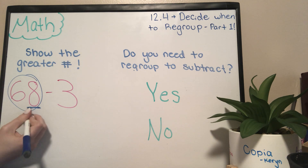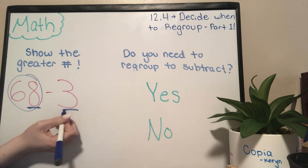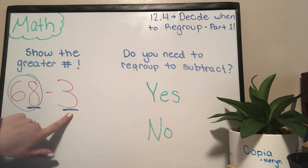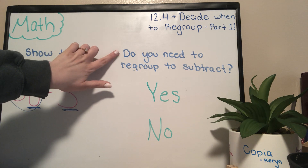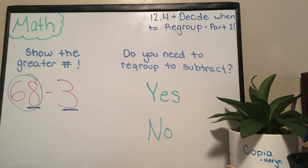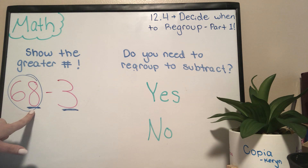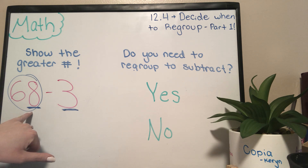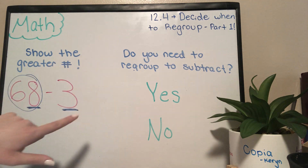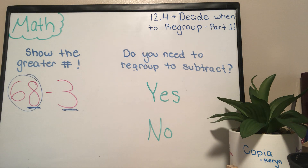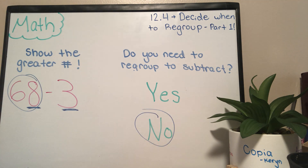Take a look at the number in the ones place here and the number in the ones place here. Now we have to think about our second question: do you need to regroup to subtract? Let's say that I have eight cookies and somebody comes up and they ask me for three. If I have eight, can I give them three? Yes, for sure. So do I need to regroup to subtract? Do I have to go back into the kitchen and start baking more cookies? No. We have our answer right there.